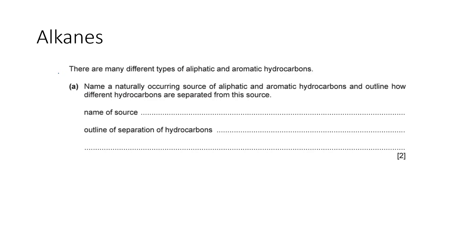There are many different types of aliphatic and aromatic hydrocarbons. This question wants us to name a source of these hydrocarbons and outline how they are separated. The source is crude oil, and the separation process is known as fractional distillation. Fractional distillation works because these different hydrocarbons are in fractions having different boiling points.